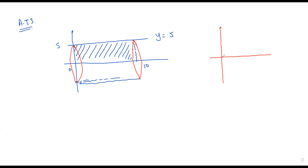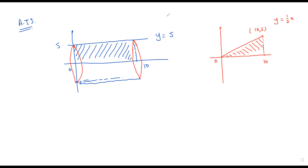Now suppose I have the line y = x/2. Here the point at x = 10 gives us the coordinate (10, 5). If I revolve this region about the x-axis, what kind of solid do I get? That will be a cone shape.